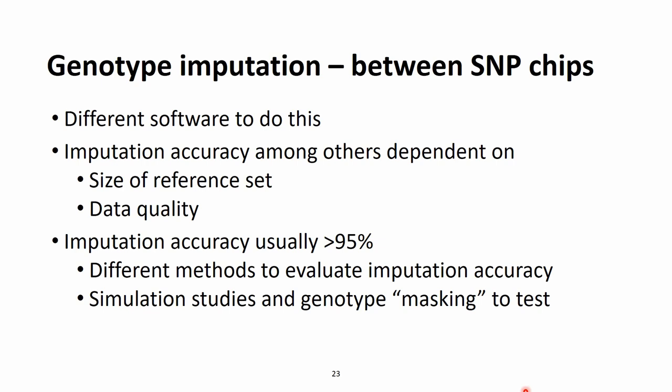There is also a range of possibilities for how to evaluate actual imputation accuracy, and it is mostly done with the so-called masking procedure. Genotypes obtained from a higher density SNP chip are taken, some of these genotypes are deleted, and then the imputation software is used to fill these missing markers back in. Because we know what the actual genotype is for the higher density SNP chip, the values filled in by the software and those obtained from actual genotyping are compared — this is the basis for evaluating how good a job the imputation software does.